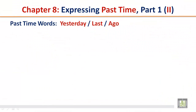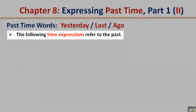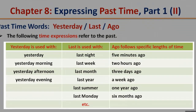Past time words: yesterday, last, ago. The following time expressions refer to the past. 'Yesterday' — e.g., yesterday morning, yesterday afternoon, yesterday evening. 'Last' — e.g., last night, last week, last month, last year. 'Ago' follows specific lengths of time — e.g., five minutes ago, two hours ago, three days ago, a week ago. Please look at the rest of the chart.